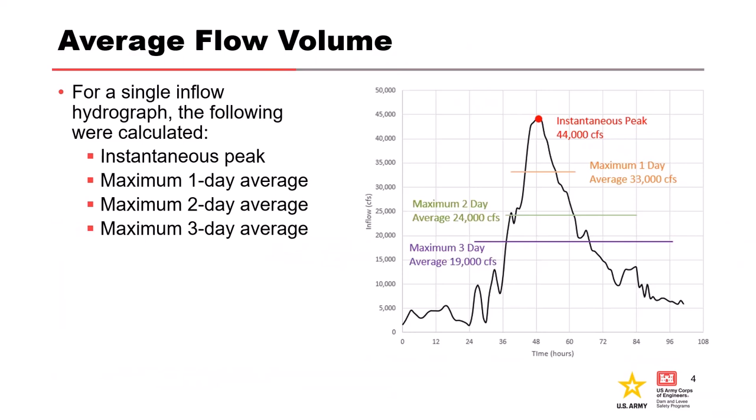Daily average inflow data is typically based on a calendar day and is not maximum 24-hour period information. This can bias the published daily flow data to the low side. For shorter critical durations this has the potential to bias the frequency curve; for longer durations the bias can get washed out. If you have sub-daily flow data, you should calculate the true 24-hour maximum average or true maximum three-day average — not limiting yourself to a midnight-to-midnight or noon-to-noon time period.